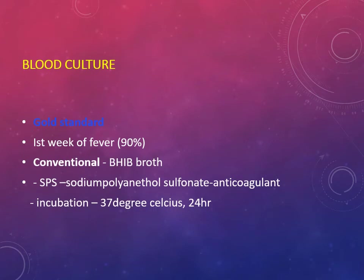Conventional methods or automated methods can be used. In the conventional method, brain heart infusion broth is used where the anticoagulant sodium polyanethol sulfonate is present. The blood to broth ratio is taken as 1:5 to 1:10. Once the blood sample has been added to the broth and reached the lab, it is incubated at 37 degrees Celsius for 24 hours. Then on the next day, subcultures are done on plates like blood agar, MacConkey agar, or chocolate agar.